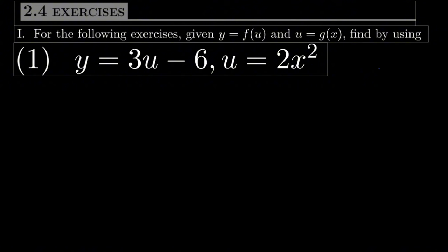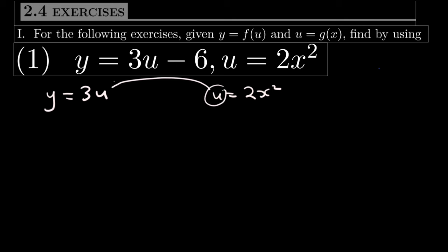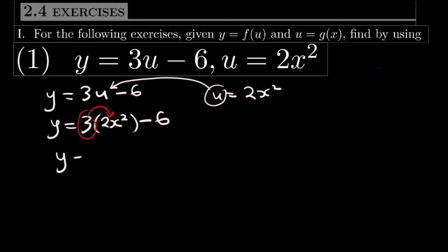For the following exercise, given y equals f of u and u equals g of x, we have to find the derivative. We have y here as 3u and u is given as 2x squared. So we will put u in the place of 3u minus 6. So y will be equal to 3 multiplied by 2x squared minus 6, which gives y equals 6x squared minus 6.